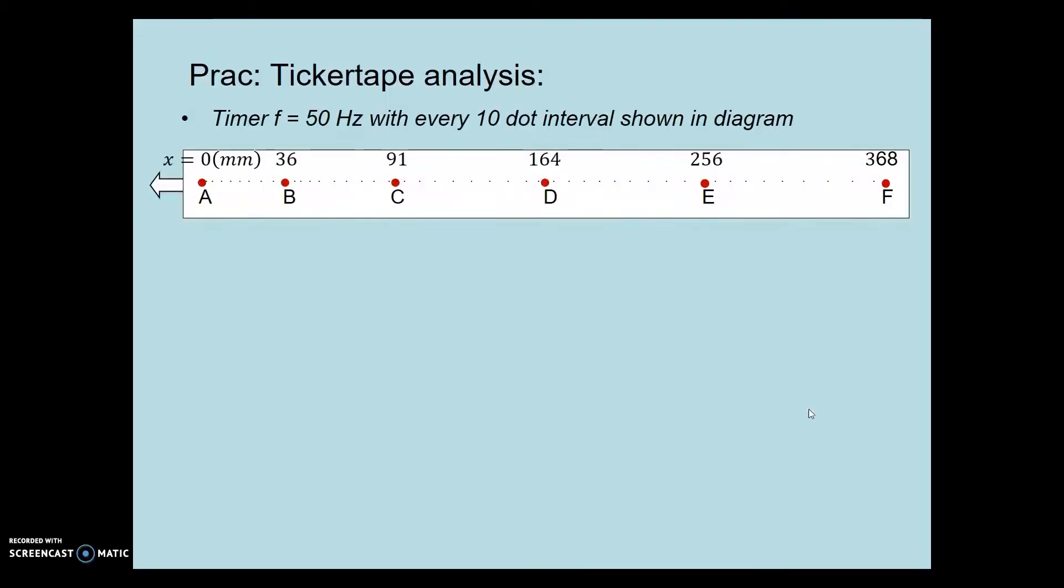So these are the values that we have just measured. Again, we remind you that the time between A and B, which is 10 intervals, is 0.2 seconds and so on until point F.